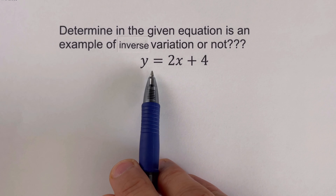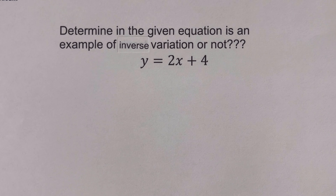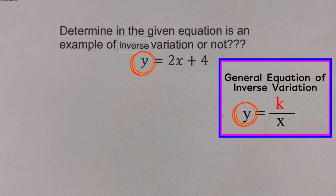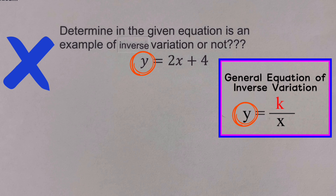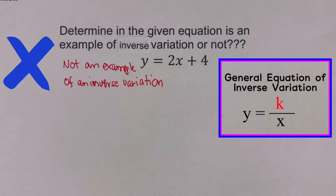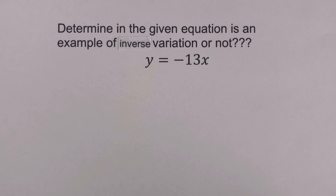Now let's move on to the next example: determine if the given equation y equals 2x plus 4 is an example of an inverse variation or not. We remember that the general equation for an inverse variation is y equals k over x. Our y is isolated by itself, which is good. However, notice the location of x — it is not in the denominator of a constant. So this is not an example of an inverse variation because x is not in the denominator of k, and we also have an extra constant of 4.